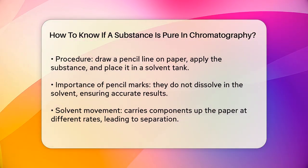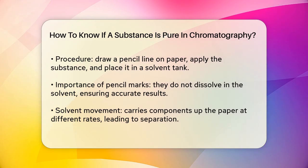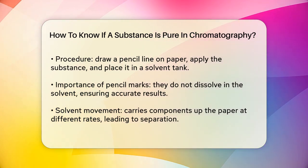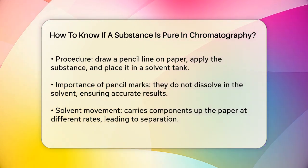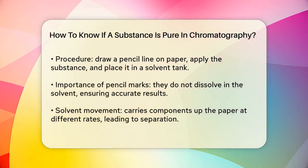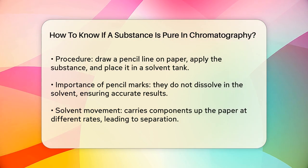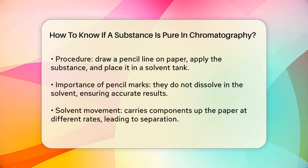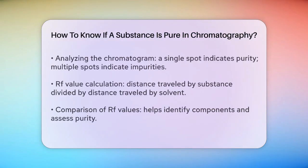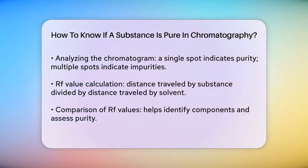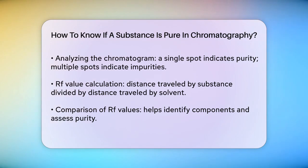To determine if a substance is pure, you look at the chromatogram — the final result of the chromatography process. If the substance is pure, you'll see a single spot on the paper. If it's impure, you'll see multiple spots, indicating that the substance is made up of different components.